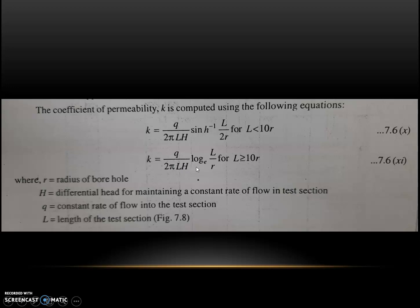Here, R is equal to radius of the borehole, H is equal to differential head for maintaining a constant rate of flow in the test section, Q is equal to constant rate of flow in the test section, and L is the length of the test section.